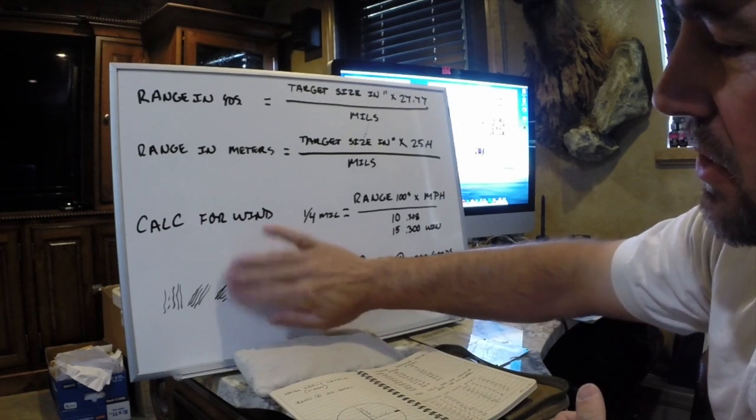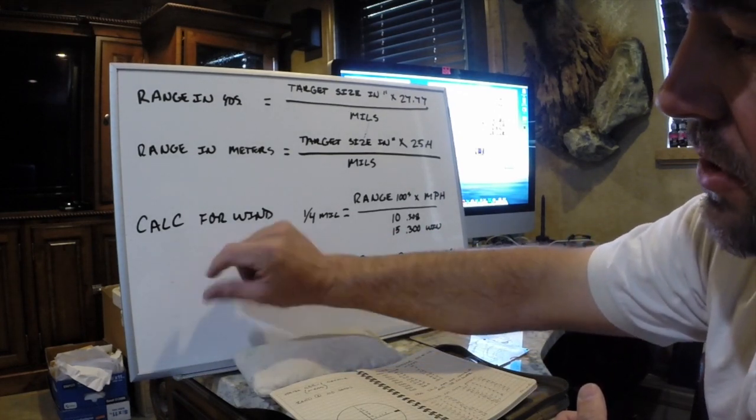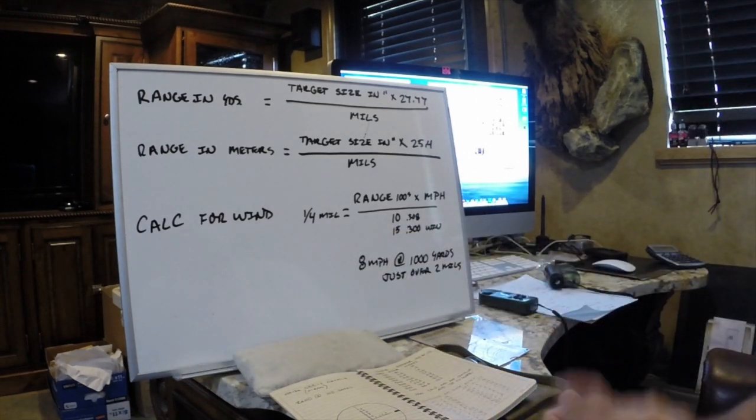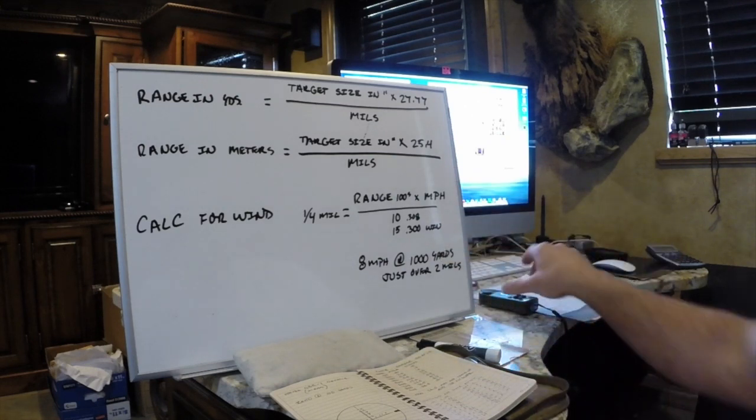There's a lot more that gets into it. There are things like the temperature, the humidity, the altitude, your barometric pressure. All those things affect the bullet. And the math gets insane, almost too much.